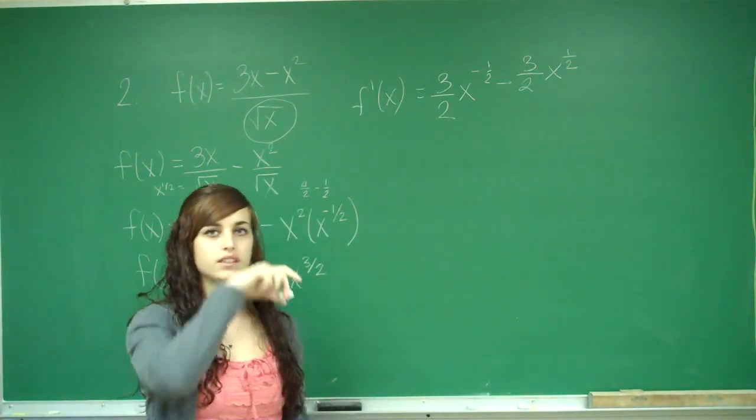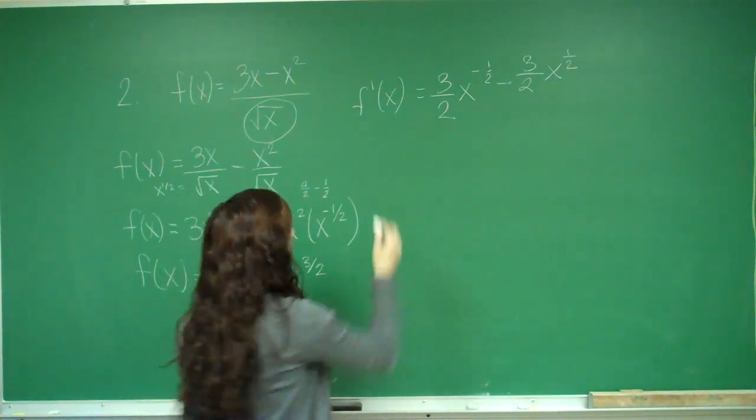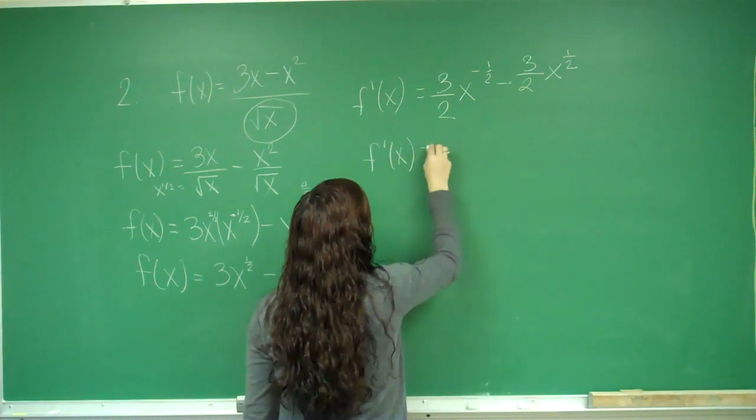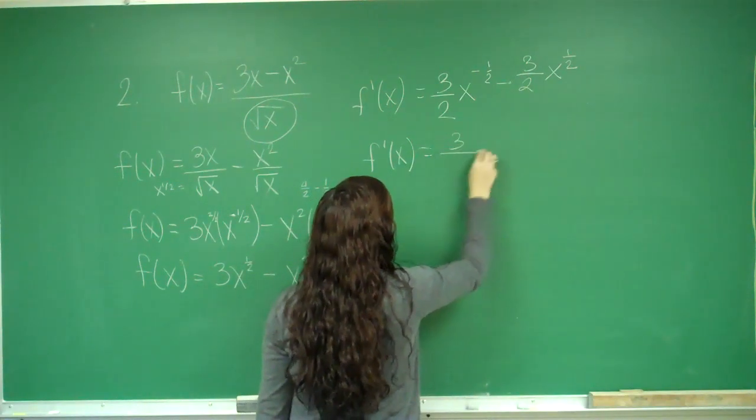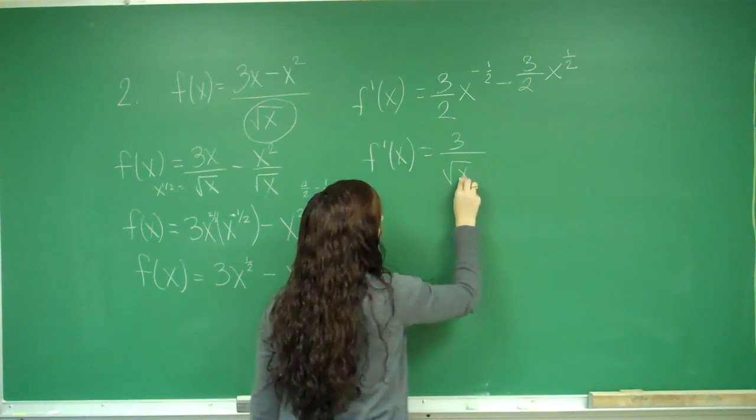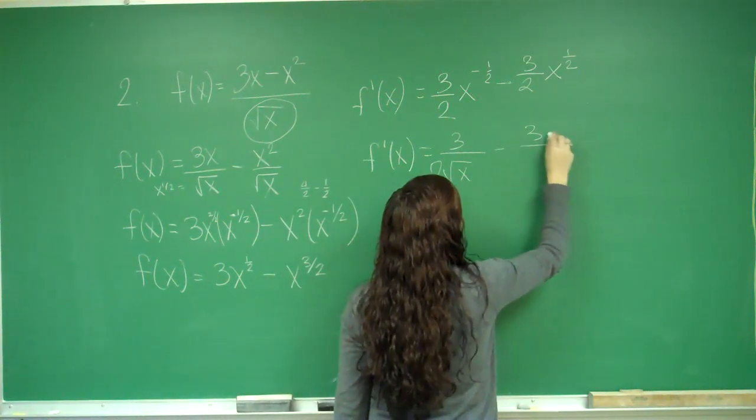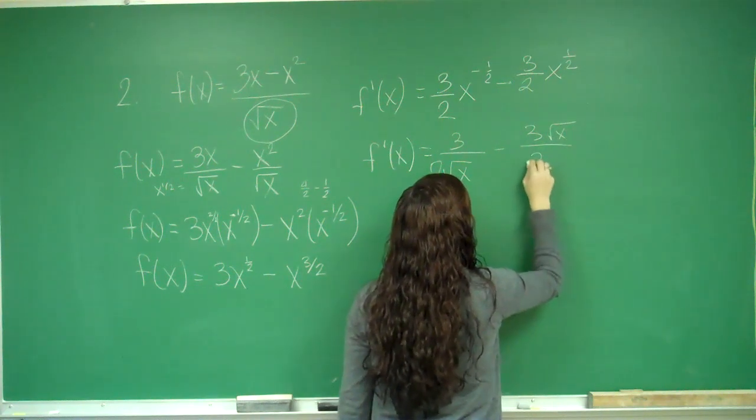Now I'm going to simplify this sum, so that way it looks like my answers on my paper. I have f prime of x is equal to 3 over 2 square root of x, minus 3 square root of x over 2.